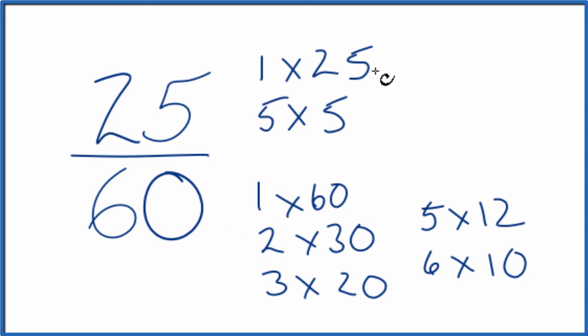So when we look at the factors for 25 and for 60, we're looking for the greatest common factor. And it looks like 5 is going to be the greatest common factor. So we divide 25 by 5, then 60 by 5, and we'll have factored 25/60.